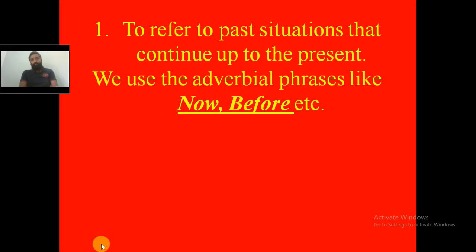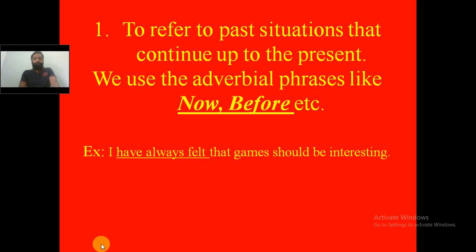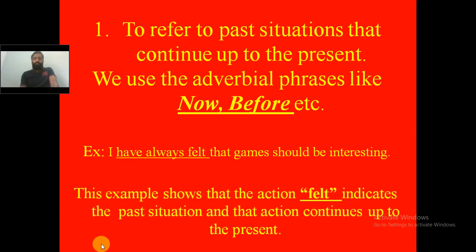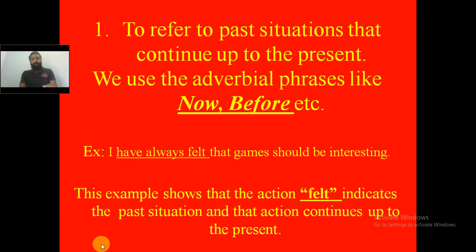To refer to past situations that continue up to the present means there was a past situation which is being continued up to the present. For example: 'I have always felt that games should be interesting.' The past situation is that feeling, which started in the past and is continued to the present. This example shows that the action 'felt' indicates the past situation and that action continues up to the present. That is the first usage of present perfect tense.